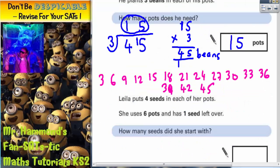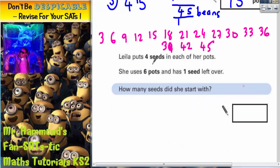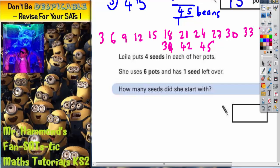Let's scroll down to see the second part of the question. Lila puts 4 seeds in each of her pots. She uses 6 pots and has 1 seed left over. How many seeds did she start with?